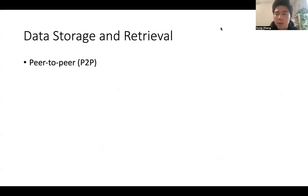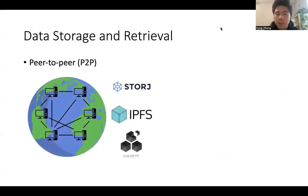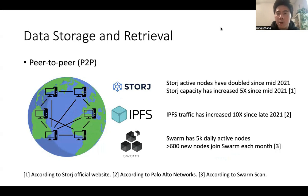In this paper, we focus on peer-to-peer data storage systems. There are some famous P2P data storage systems, including Filecoin Storage, IPFS, and Swarm. And they are becoming increasingly popular. For example, IPFS traffic has increased 10 times since late 2021.